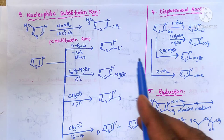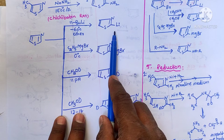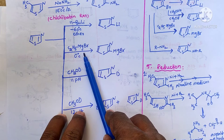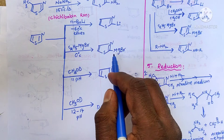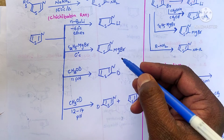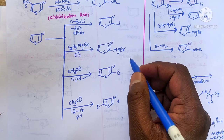Here thiazole is treated with n-butyl lithium at minus 60 degrees centigrade and we get 2-lithio thiazole. When treated with ethyl magnesium bromide at zero degrees centigrade we get bromomagnesium thiazole derivative. When thiazole is treated with deuteromethanol — methyl deuteroxide — at pH 11 we get 2-deuterothiazole, and when pH is maintained at 12 to 14 we get both 2-deuterothiazole and 5-deuterothiazole.